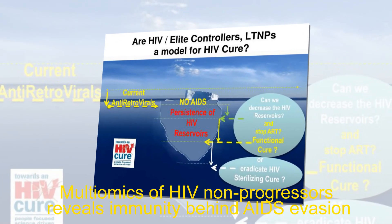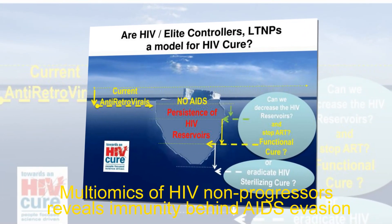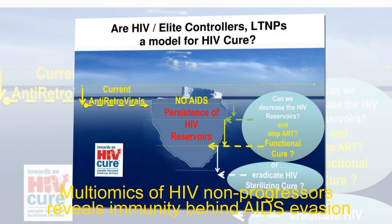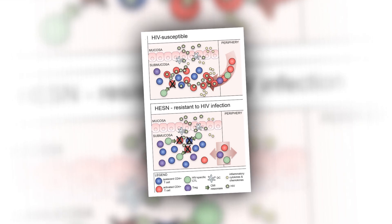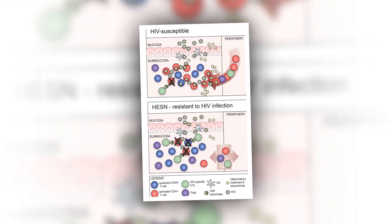Multiomics of HIV Non-Progressors Reveals Immunity Behind AIDS Evasion. A multiomics analysis led by the IrsiCaixa AIDS Research Institute has uncovered genetic and immune mechanisms in some HIV-positive individuals